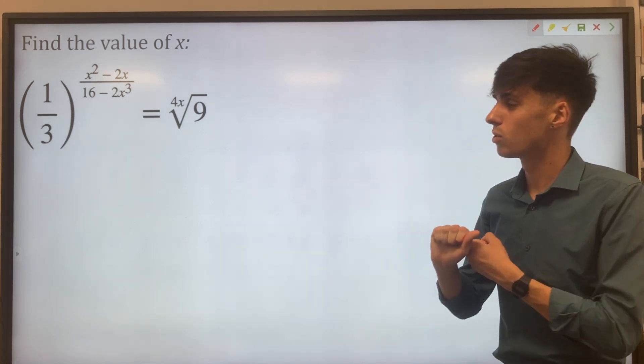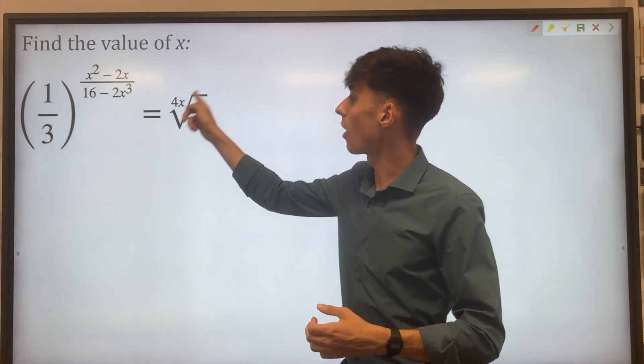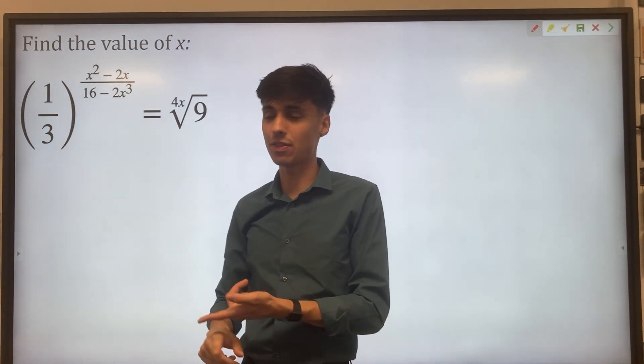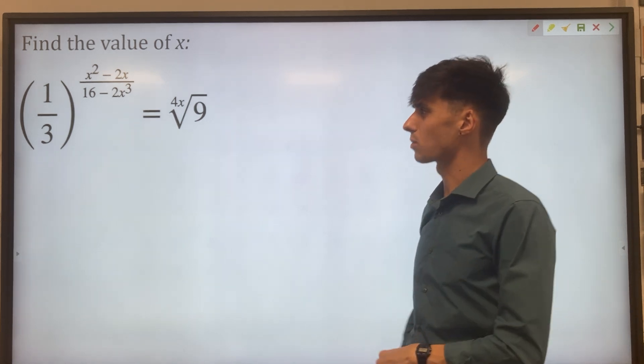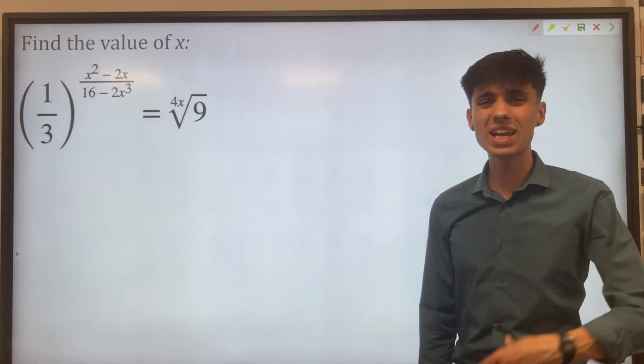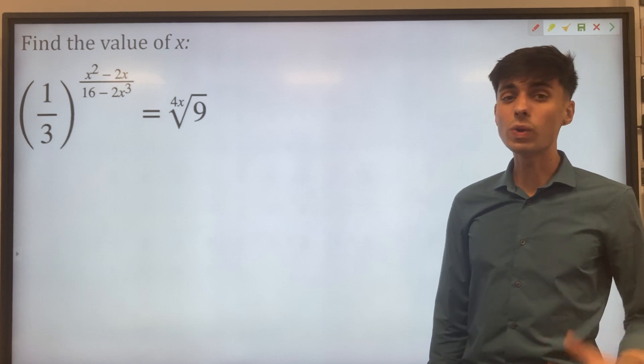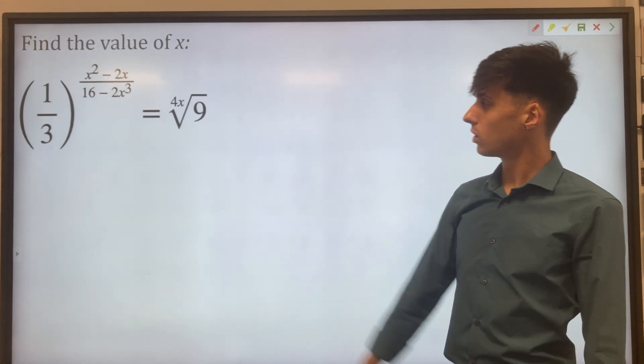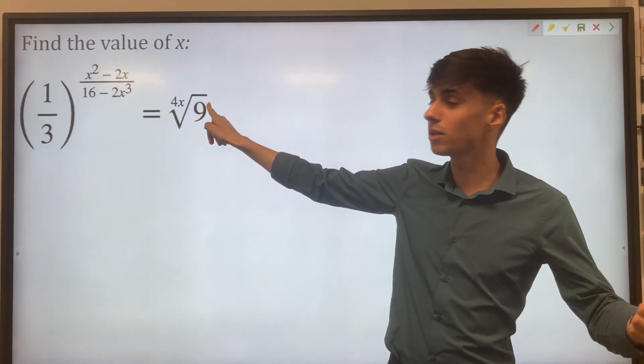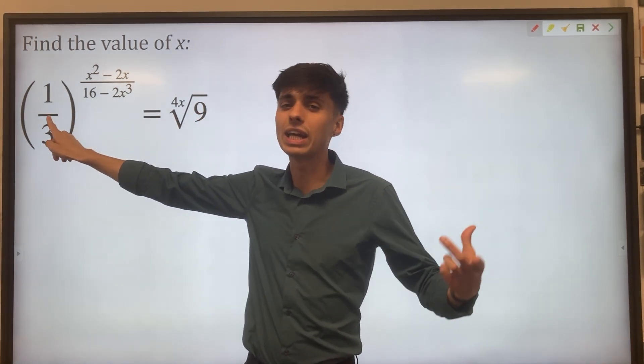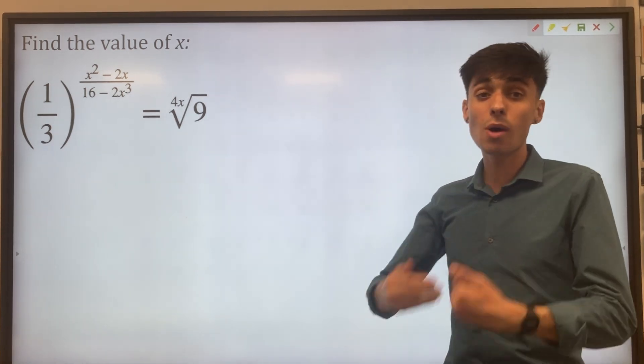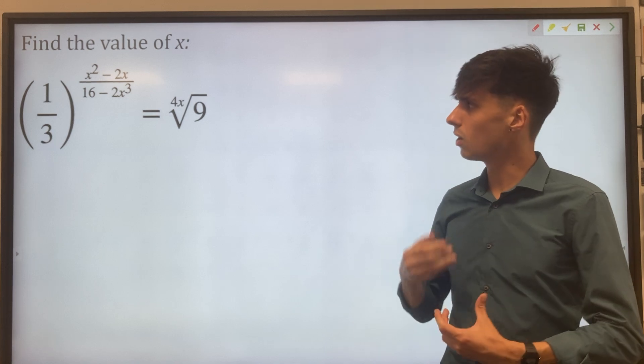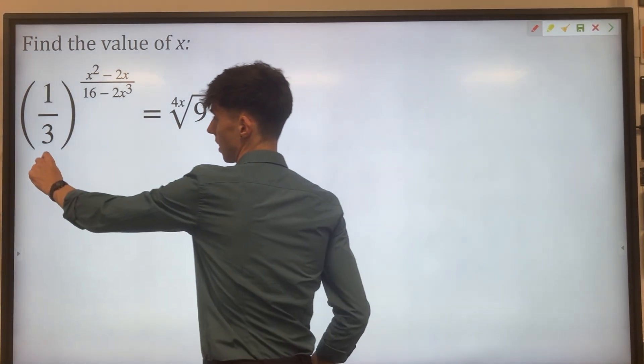So step one should be thinking how can we link a power of 9 or a root of 9 and a power of a third together, and then step two will be trying to sort this out somehow. So let's think about step one. Well we'd like a common base for our two powers, so we would like a number that goes into 9 but also nicely links or goes into one third somehow. The number I'm going to choose is 3 to help us with this.